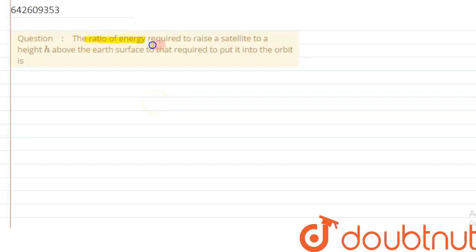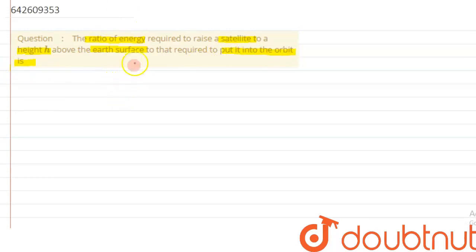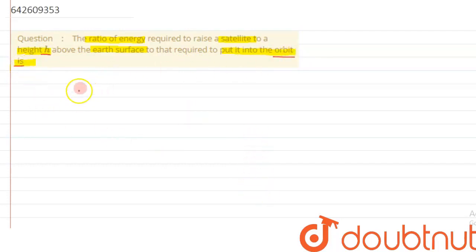We are given a question which says: the ratio of energy required to raise a satellite to a height h above the earth's surface to that required to put it into the orbit. We have been asked to calculate the ratio of energies — first is to just take the satellite to height h, and next is the energy required to put the satellite into its orbit.